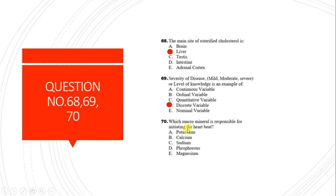Question 70: Which mineral is responsible for initiating the heartbeat? The answer is calcium. The heart has two systems: the conducting system (SA node, AV node, Purkinje fibers) and the myocardium. Calcium enters the SA node myocyte causing depolarization, while in the myocardium sodium enters to cause depolarization. Since the heartbeat is initiated by the SA node, calcium is the answer.